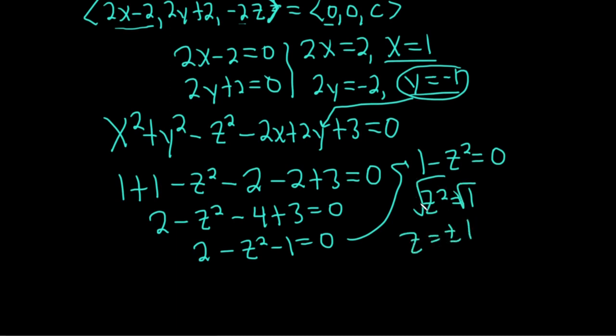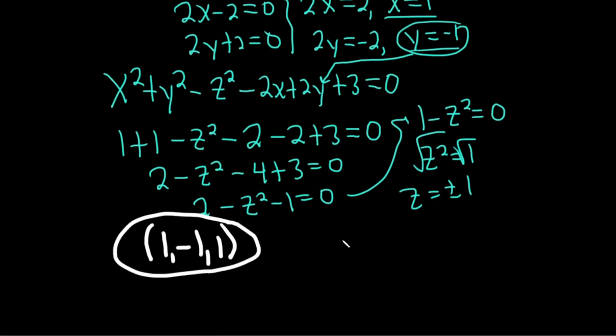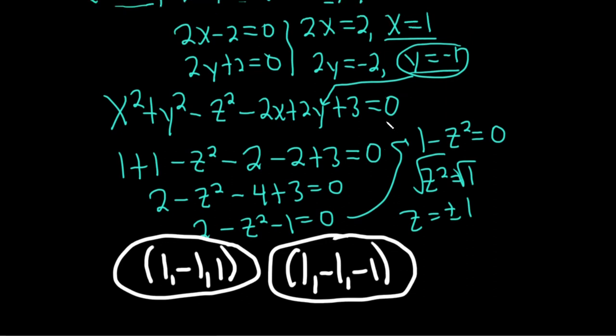So we have two points where the tangent plane is horizontal. They're not possible points. They are the points. So we have (1, -1, 1). That's one of the points where the tangent plane is horizontal. The other one would be (1, -1, -1). Just one for each case of the z. And we keep our x's and our y's.